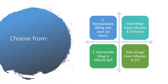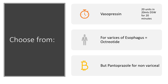You can choose pantoprazole: 80 mg stat given over 10 minutes, then 8 mg per hour infusion for 72 hours. You can go for octreotide: 50 mcg in 100 ml of normal saline, then 25 mcg per hour infusion for the next 2 days — you can check my channel for a full presentation on octreotide. You can also choose vasopressin: 20 units in 20 ml of D5 over 20 minutes — so 20, 20, 20.